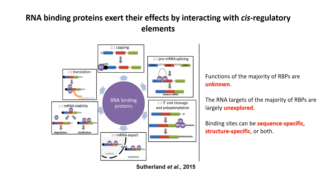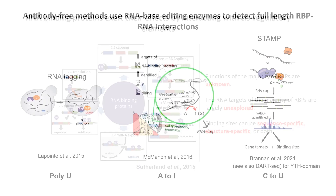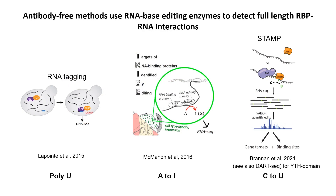However, the functions of the majority of RNA binding proteins are unknown. The RNA targets of these are also largely unexplored. RBPs can bind RNA in a sequence-specific manner, or to RNA structure, or both. There have been an emergence of many different technologies to try to identify RBP-RNA interactions using different approaches. Recently, we've been very interested in using antibody-free methods that use RNA-based editing enzymes to detect full-length RBP-RNA interactions, the most popular of which are TRIBE and STAMP.